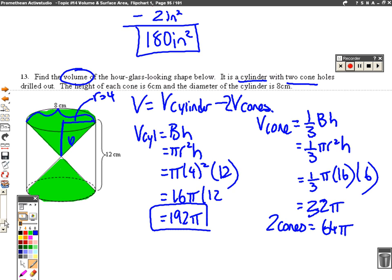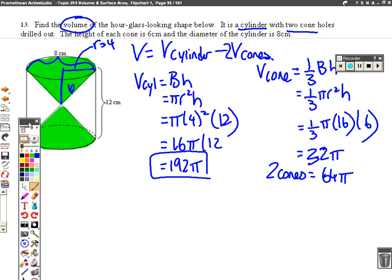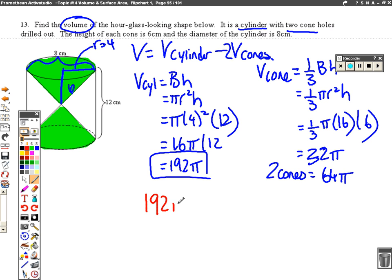So to give our final answer, we're going to do what we said we would do, which was take this 192 pi and subtract away 64 pi. So 192 minus 64 is 128 pi centimeters cubed. All right. Good luck studying.